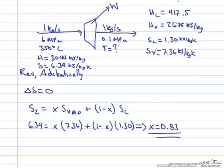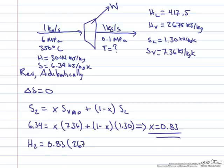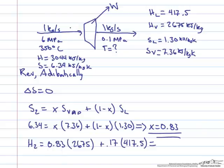Now we calculate the enthalpy of the outlet stream: H2 = x times H_V plus (1 minus x) times H_L = 0.83 times 2675 plus 0.17 times 417.5, which gives an outlet stream enthalpy of 2291 kJ per kg.